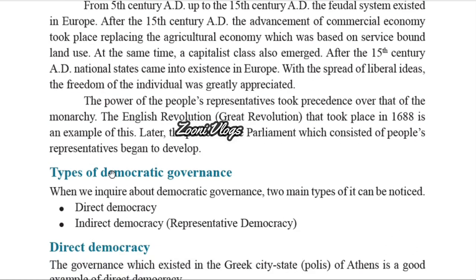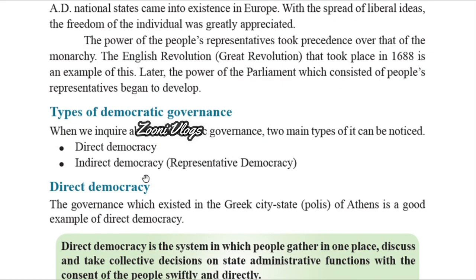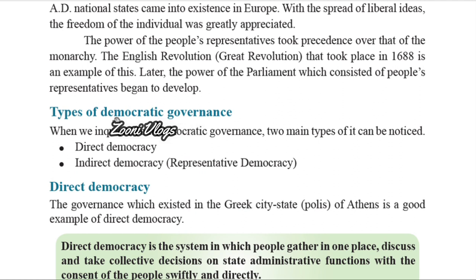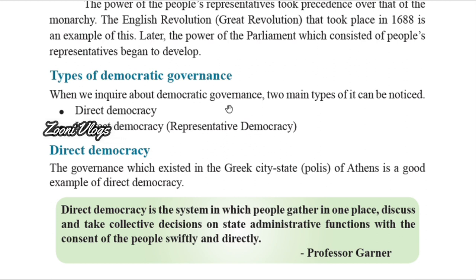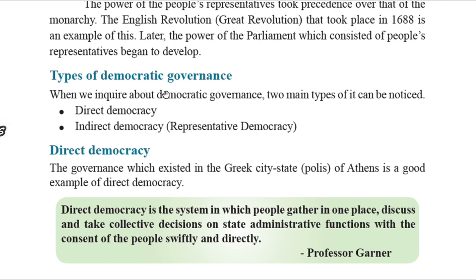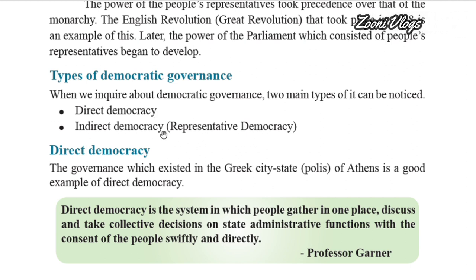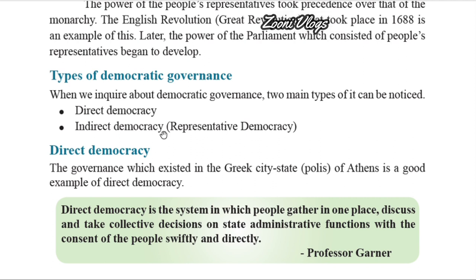Now we are going to learn about the types of democratic governance. When we inquire about democratic governance, two main types can be noticed: direct democracy and indirect democracy. For indirect democracy we can also say representative democracy.